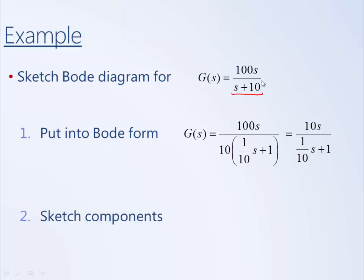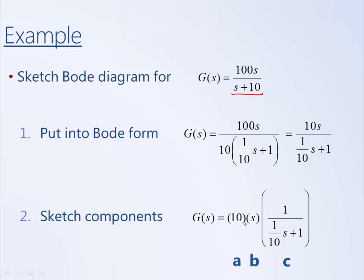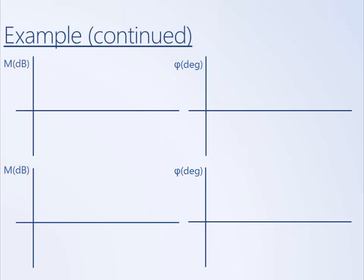The second step is to sketch the components. In this case, our components consist of a simple gain of 10, a differentiator (component B), and a simple pole (component C). We've memorized the Bode diagrams of these three types of elements. The magnitude plot of a simple gain is simply a straight line where the magnitude is equal to K. When we convert it to decibels, we have 20 log 10, where log of 10 is just 1, so that line is located at 20 dB.